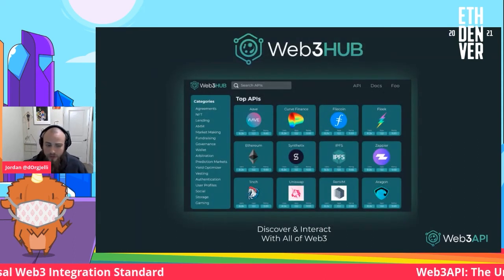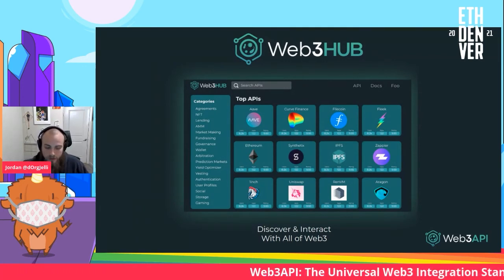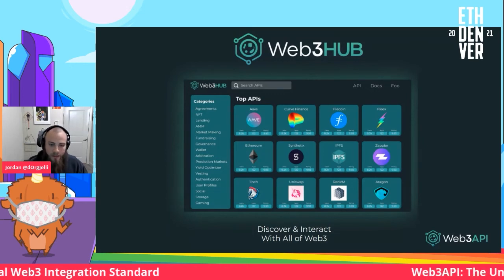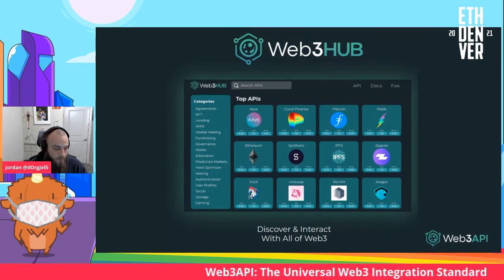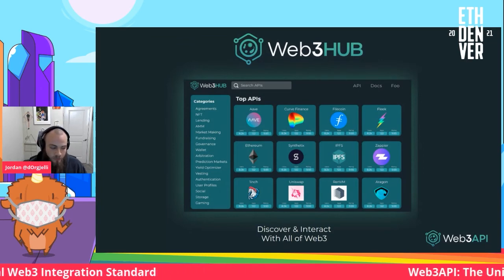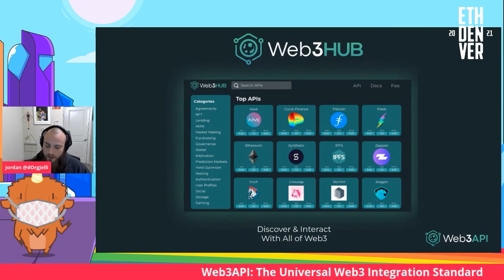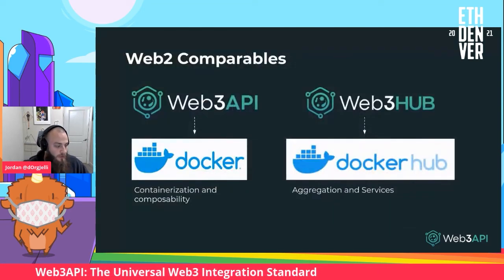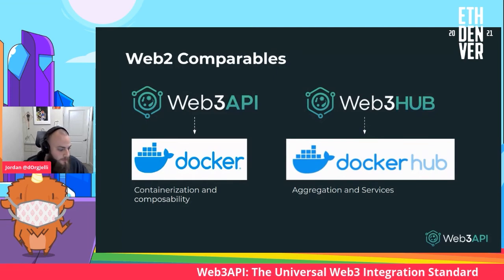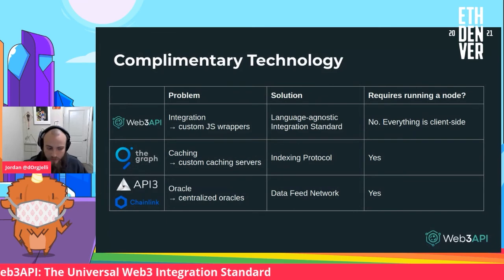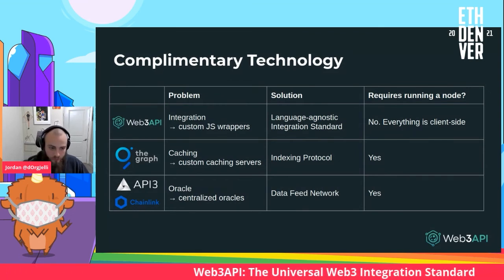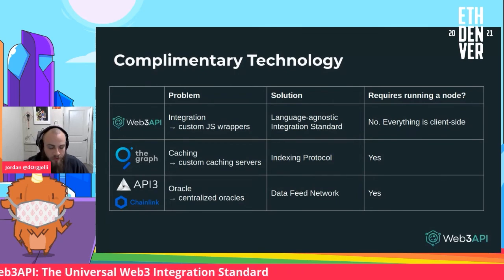The main North Star we're building toward is the Web3 Hub experience, where you'll be able to type in keywords like multi-sig, automated market maker, or loans, and get results of different APIs that exist in Web3. Right inside of the Web3 Hub, you'll be able to interact and use those protocols — for example, execute a swap looking up Uniswap, or view your DAO's proposals looking up Aragon. Web3 API is comparable to Docker as Web3 Hub is comparable to Docker Hub. We're solving a very different integration problem compared to Oracle solutions or blockchain caching solutions.